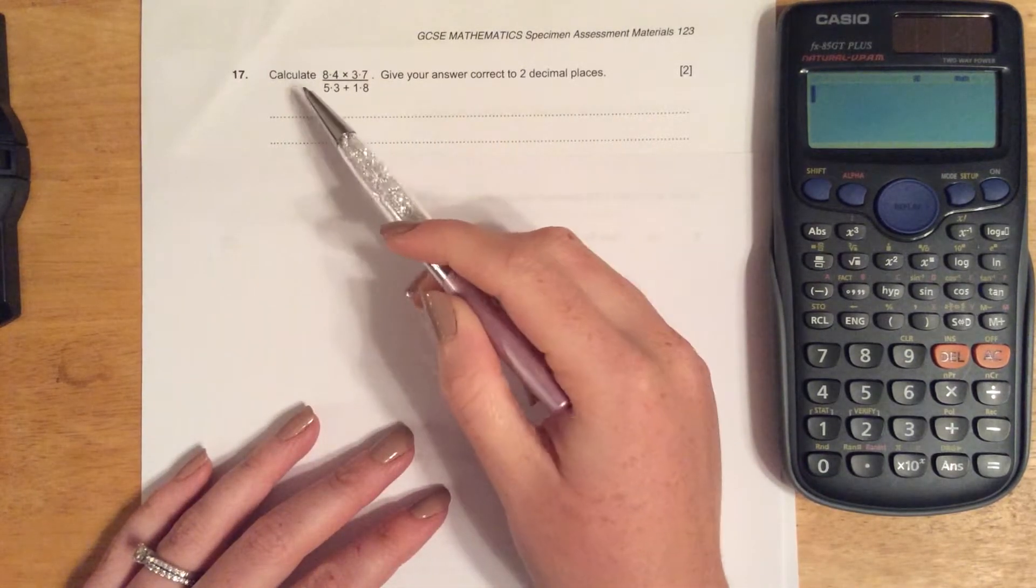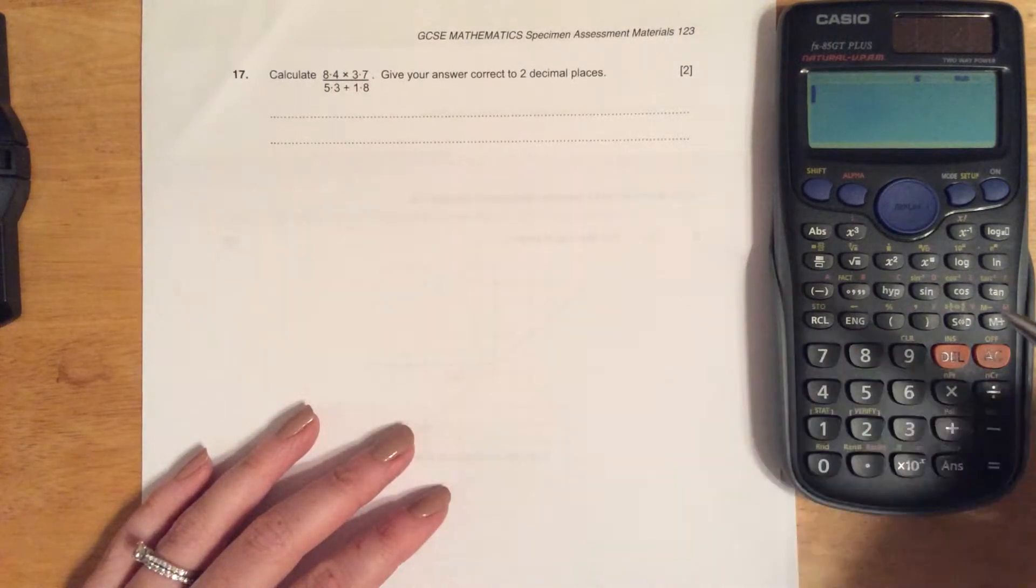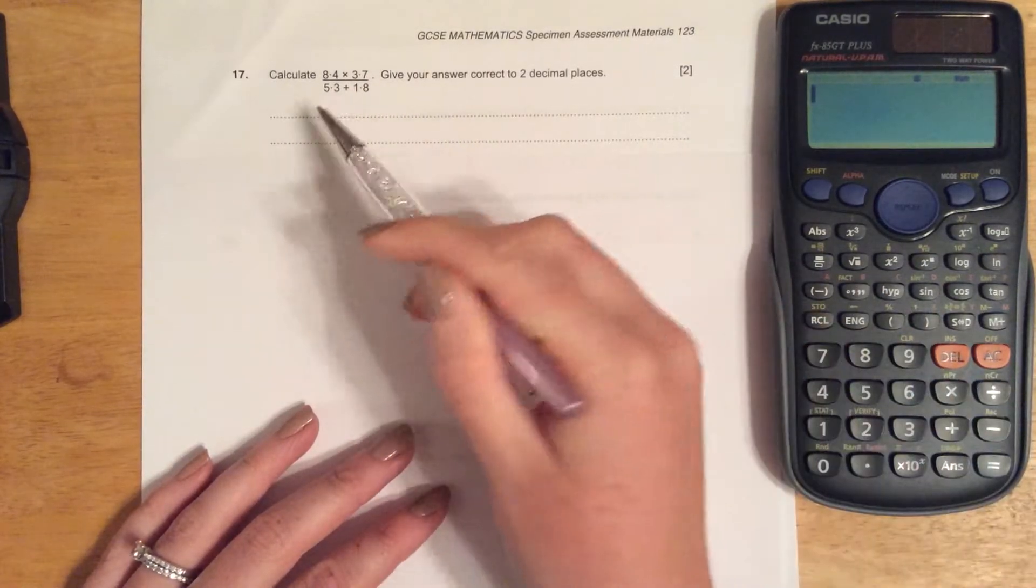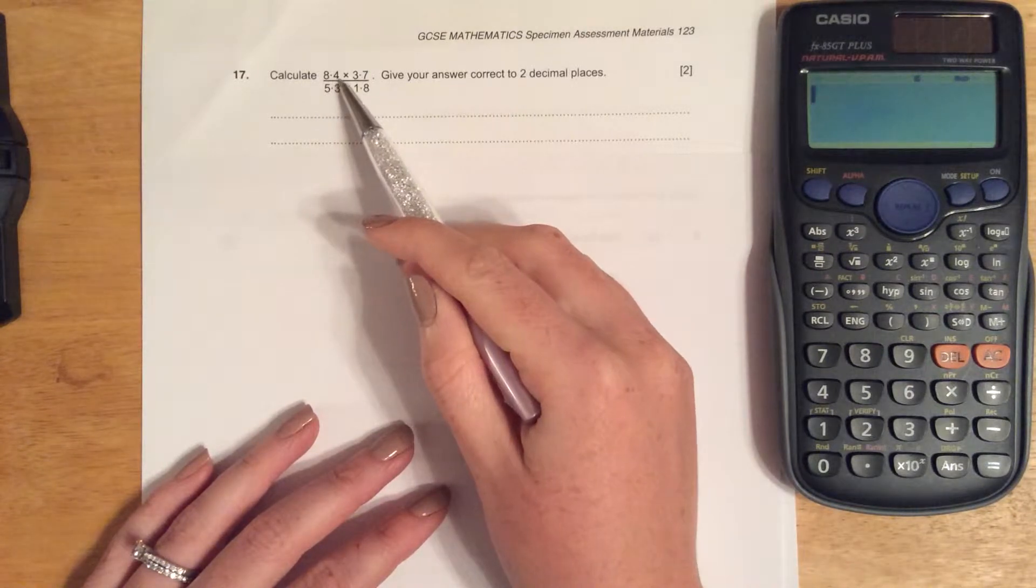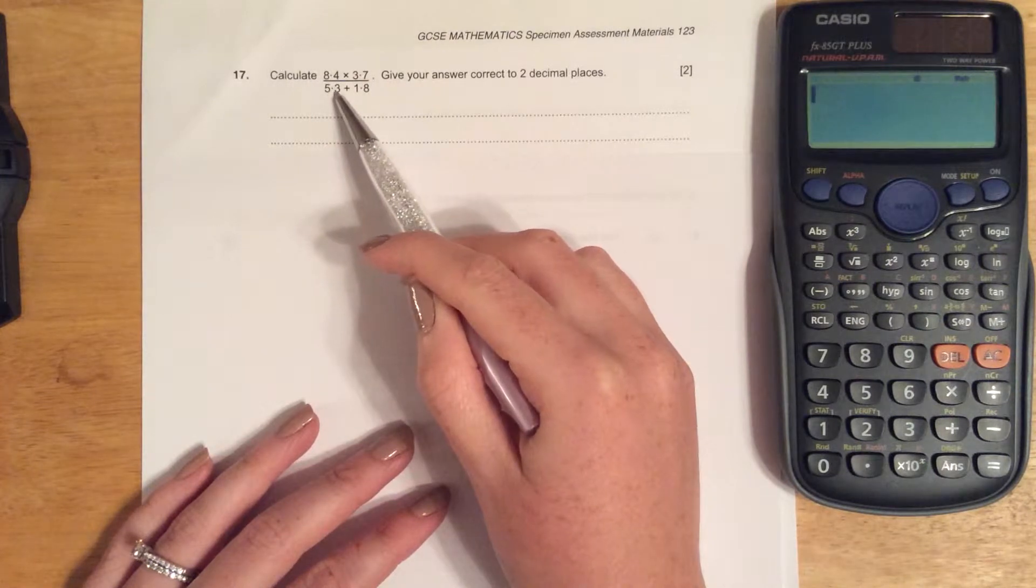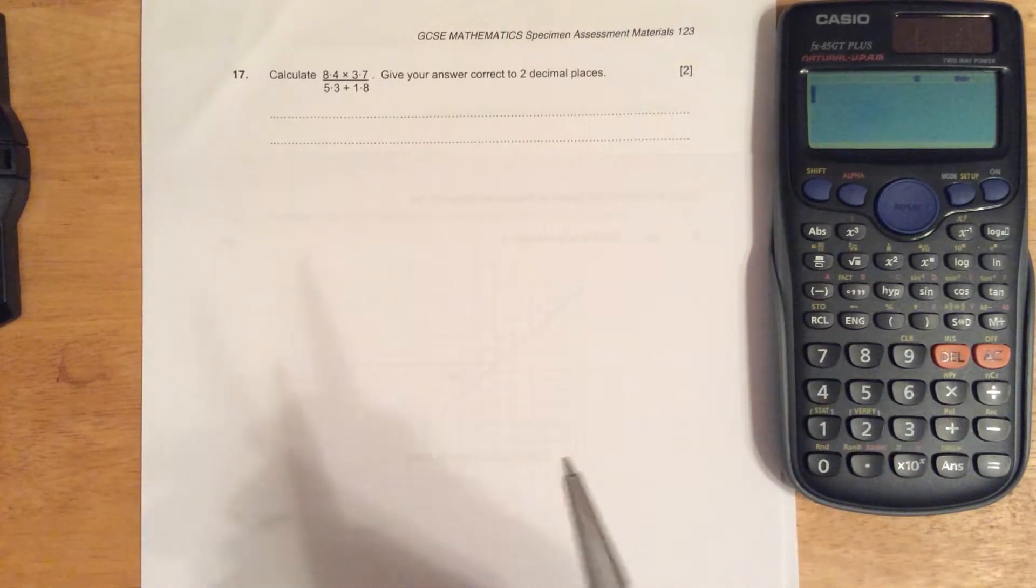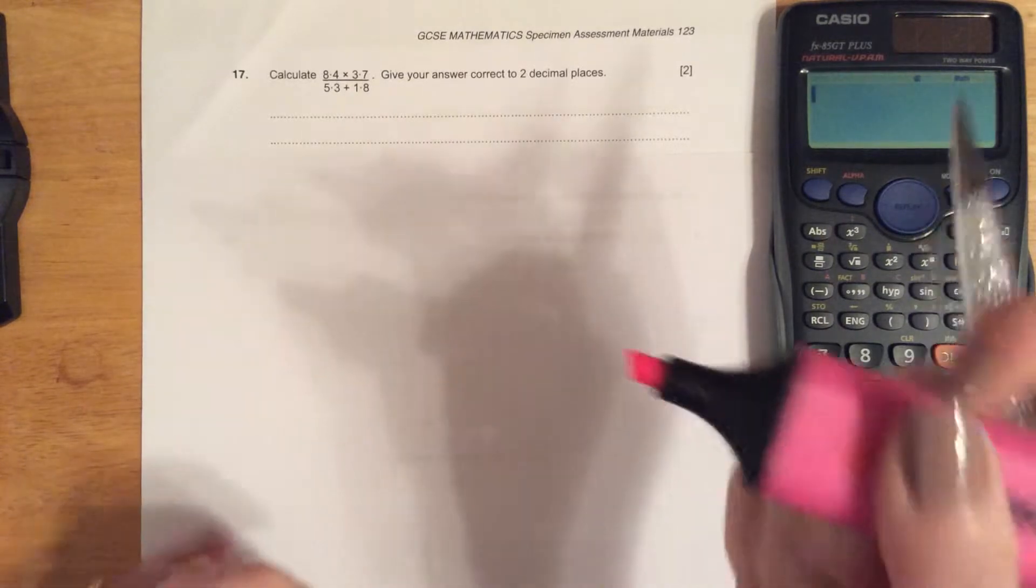Question 17 assesses your ability to use a calculator. We have 8.4 times 3.7 divided by 5.3 add 1.8. Give your answer to two decimal places, so we need to remember to round as well.